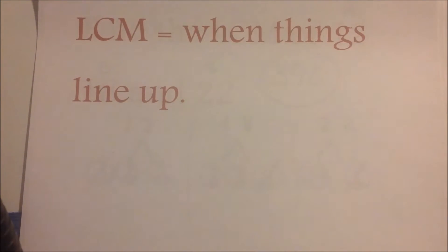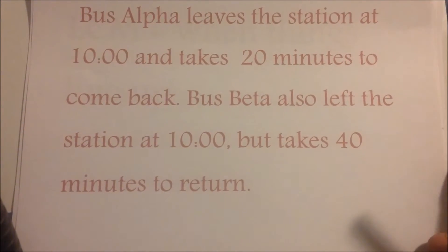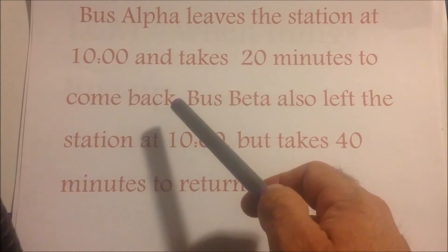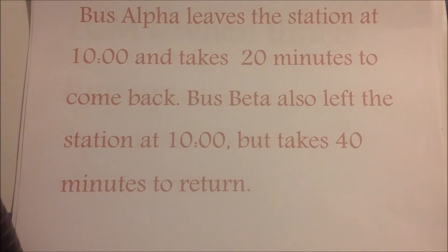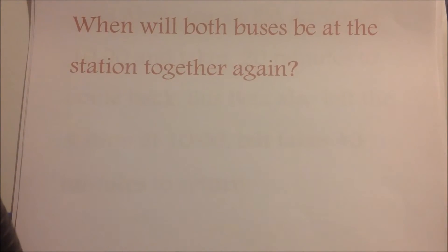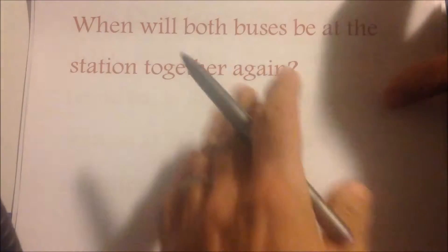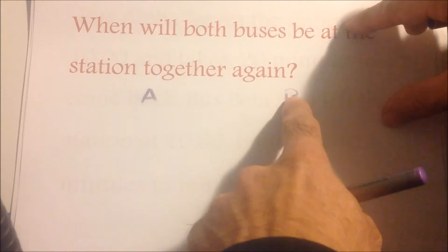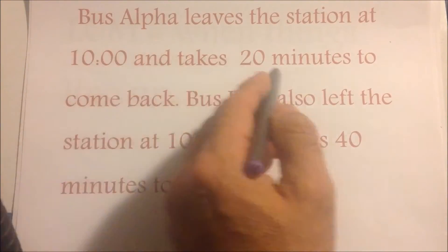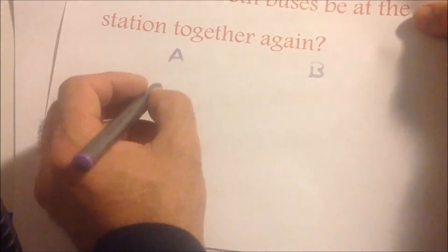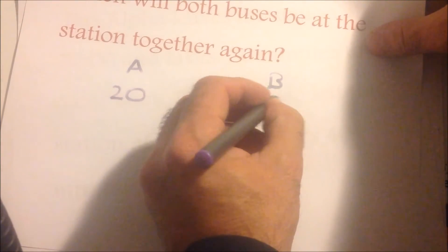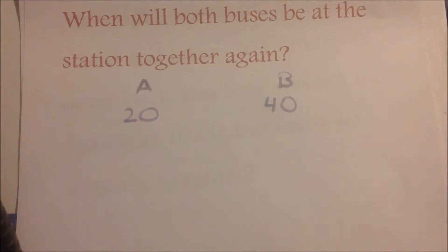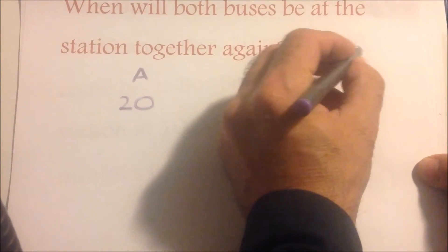Now let's try one on your own. Bus Alpha leaves the station at 10 o'clock and takes 20 minutes to come back. Bus Beta also left at 10 o'clock but takes 40 minutes to return. The question is: when will both buses be at the station together again? We take the numbers — 20 and 40 — and find the LCM.